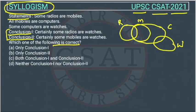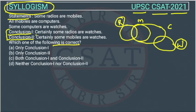We don't know the relationship between mobile and watch, and radio and watch. Conclusion one says: certainly some radios are watches. This is radio and this is watch. This conclusion is saying certainly some radios are watches — we don't know that. So this conclusion is wrong.